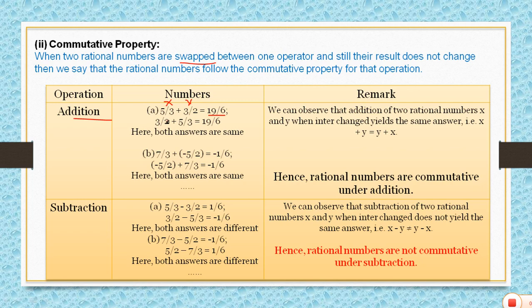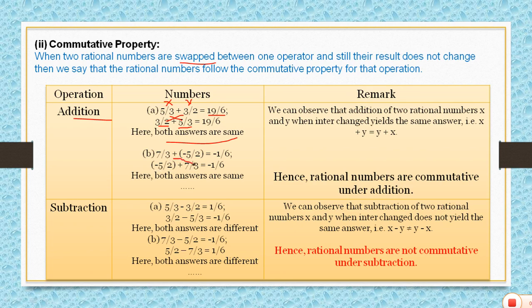After swapping, the result is also 19 by 6. Both answers are the same. Another example: 7 by 3 plus minus 5 by 2 gives minus 1 by 6. And minus 5 by 2 plus 7 by 3 — with positions changed — also gives minus 1 by 6. The answers are the same.